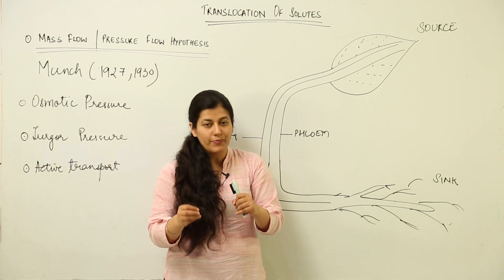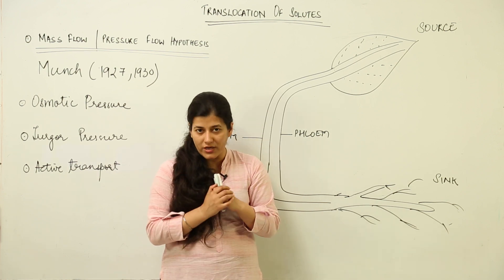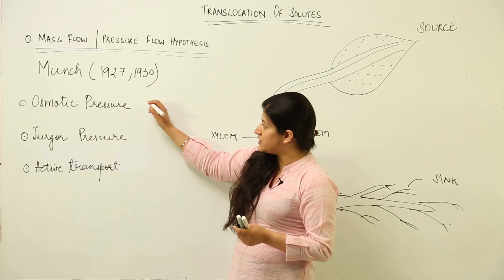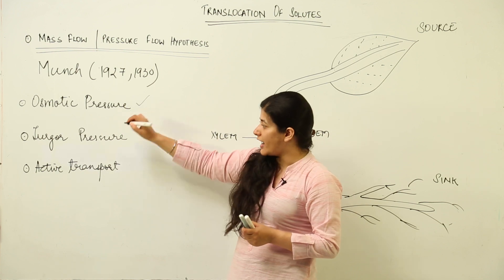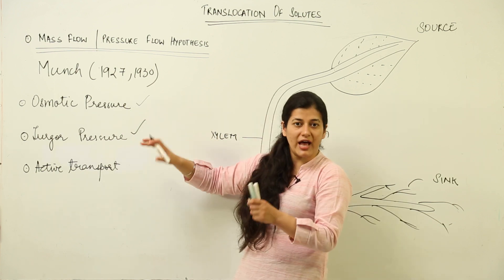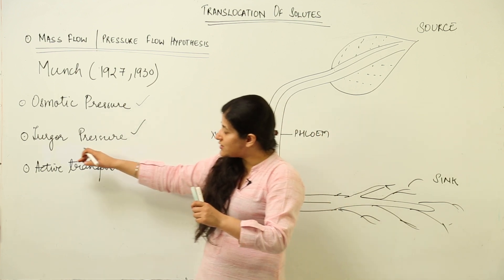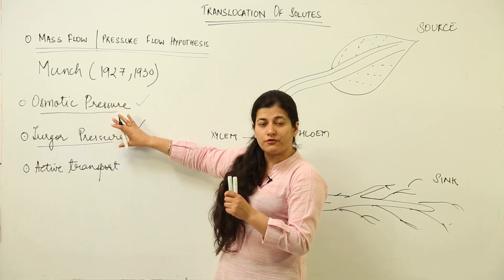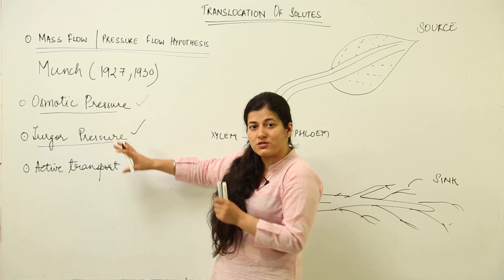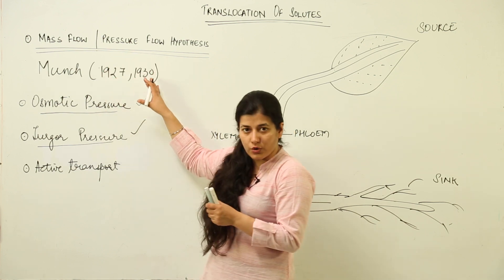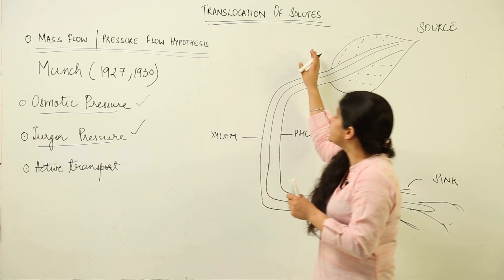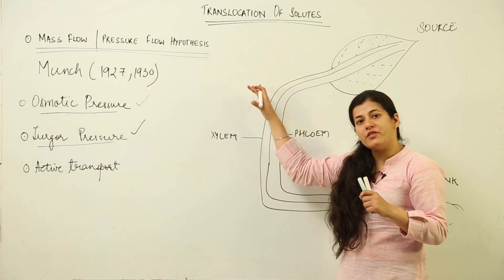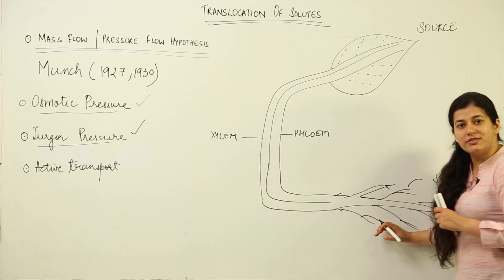Now, how is this pressure flow created? There are two forces behind it. We have studied osmotic pressure and turgor pressure in detail. It is the turgor pressure and the osmotic pressure which are responsible for bringing about mass flow or pressure flow, in which the solutes jump and take advantage of that flow from the source to the sink.